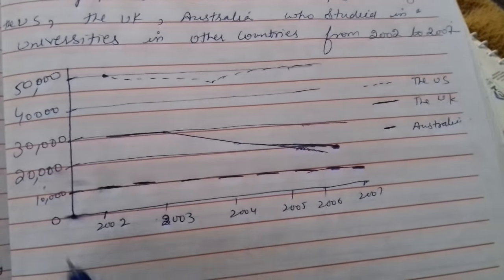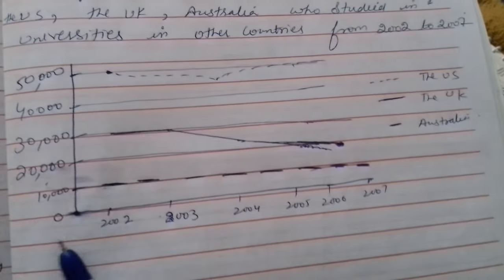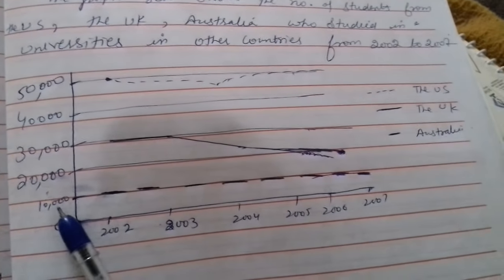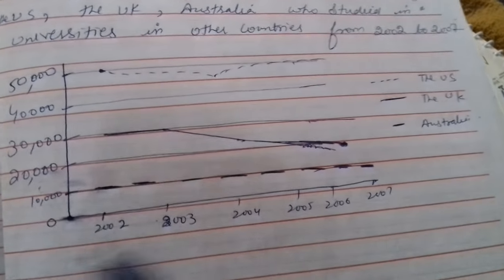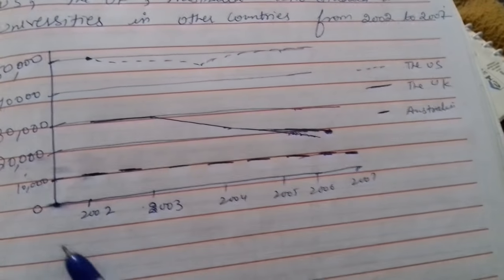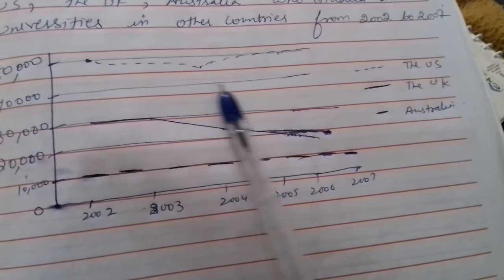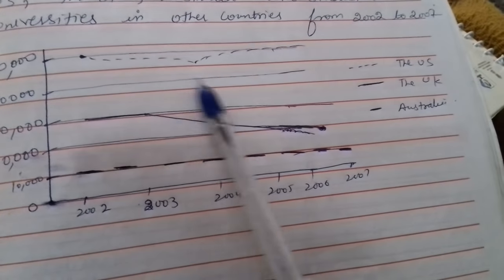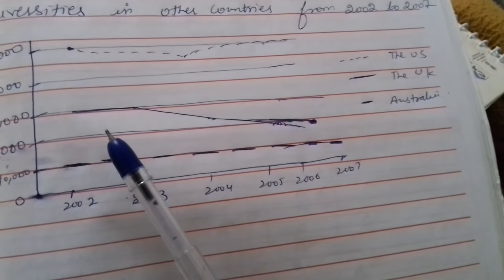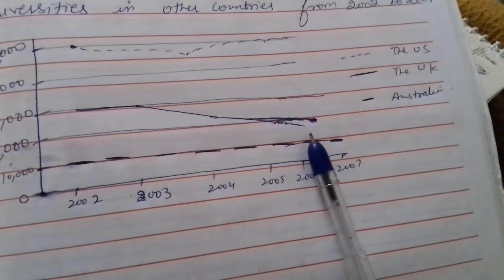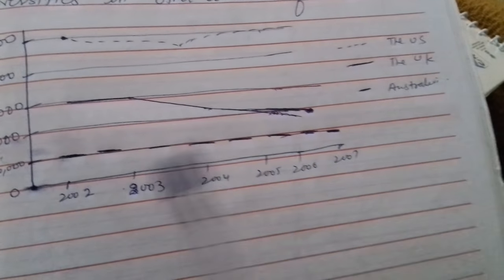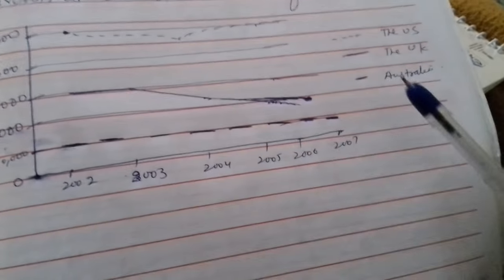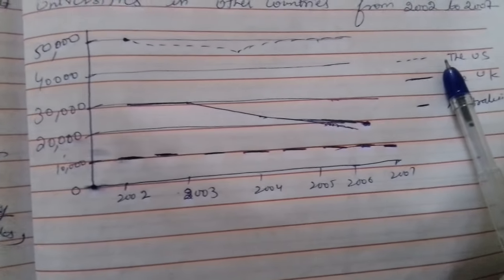First of all, when you start the graph, you will understand the graph. This is the year and this is the numbering. 10,000 students, 20,000, 30,000 students, like that. Then after that you will see the year. You will see the lines for each country. The dotted line is the US. The dotted line is the UK. The dotted line is Australian. Three countries' students.